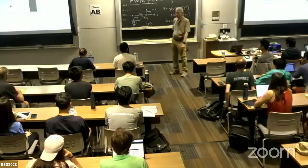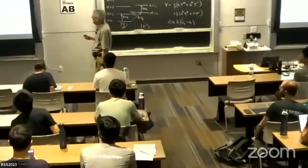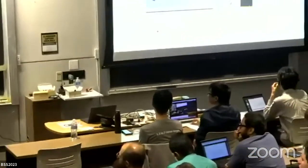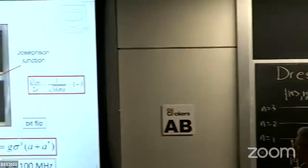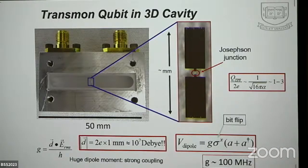This is lecture one, part B. To remind you: we have some kind of three-dimensional cavity with a superconducting qubit or synthetic atom sitting in it, talking to the electric field, which is polarized parallel to the axis carrying the dipole moment of this qubit as the Cooper pairs slosh back and forth. The dipole coupling is 10, 20, 30 million times bigger than for ordinary atoms.